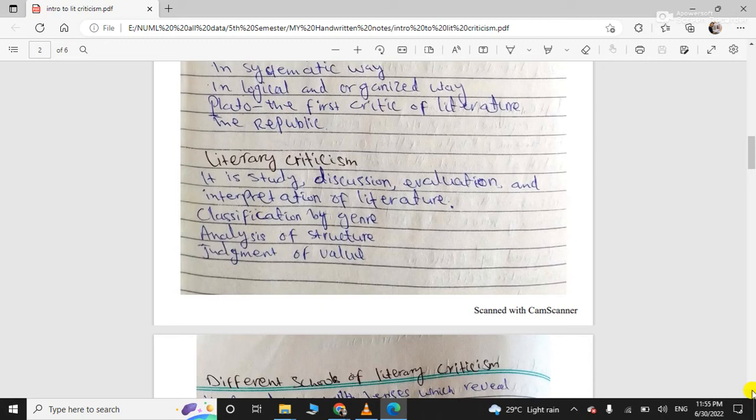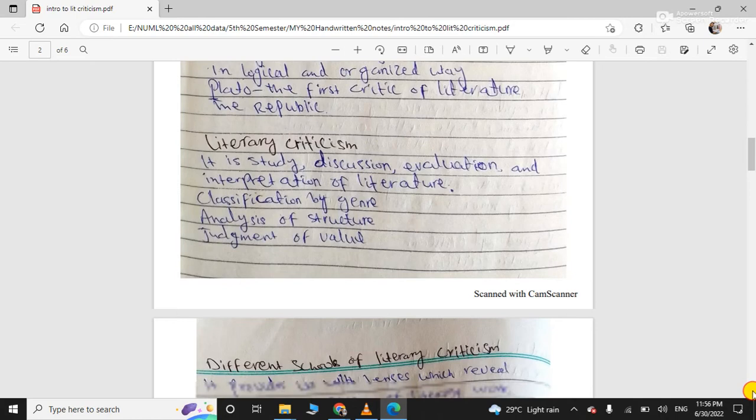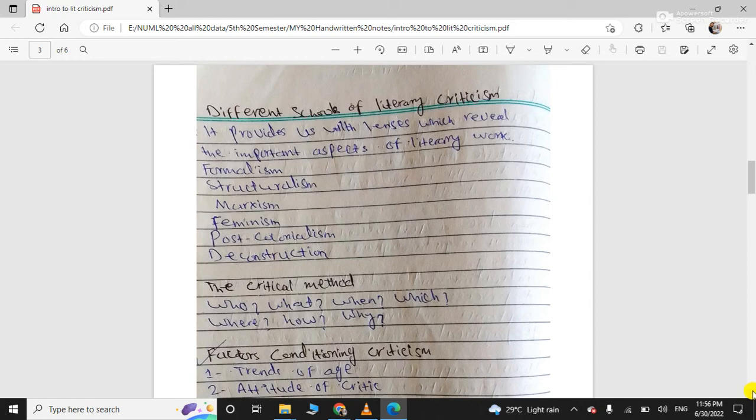In literary criticism, discussion takes place, evaluation is done, and interpretation of literature happens. Then it is classified by genre, analysis of its structure, its judgment, and so on. Then come different schools of literary criticism like structuralism, marxism, feminism - these are also called literary theories.